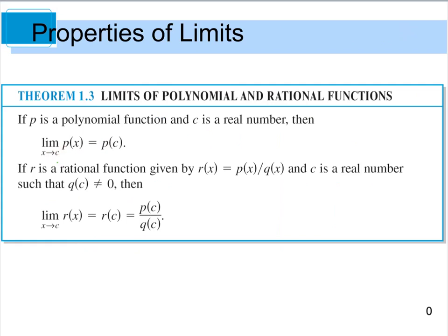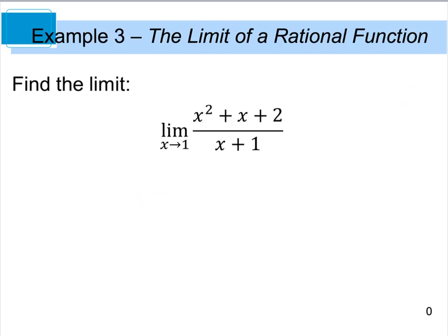Likewise, if we have a rational function — the quotient of two polynomials — we can plug in C into both polynomials to get P(C) divided by Q(C). Example 3: find the limit as X approaches 1 of X squared plus X plus 2 divided by the quantity X plus 1. Using direct substitution, we get 1 squared plus 1 plus 2 divided by 1 plus 1, which is 4 divided by 2, equal to 2.